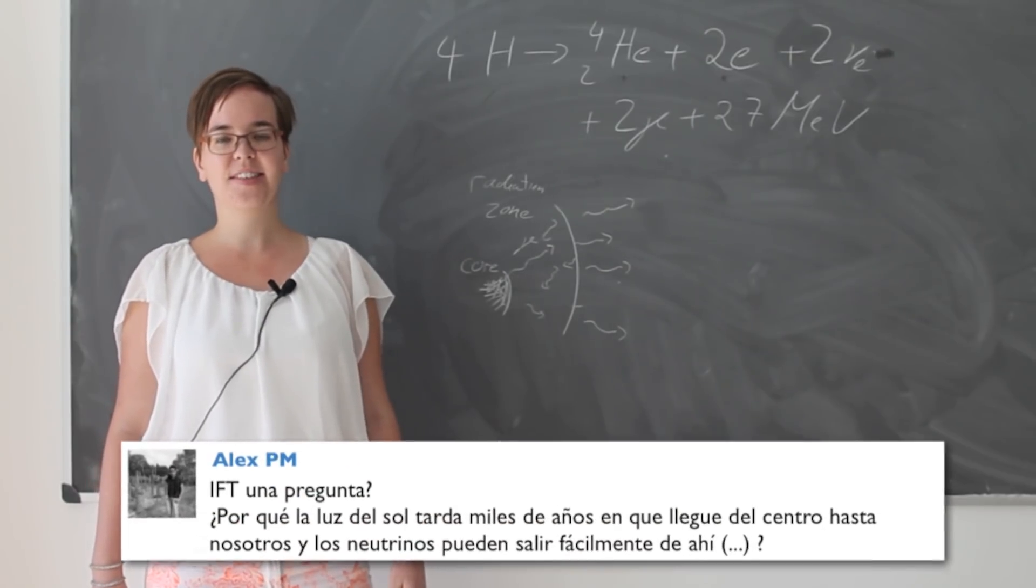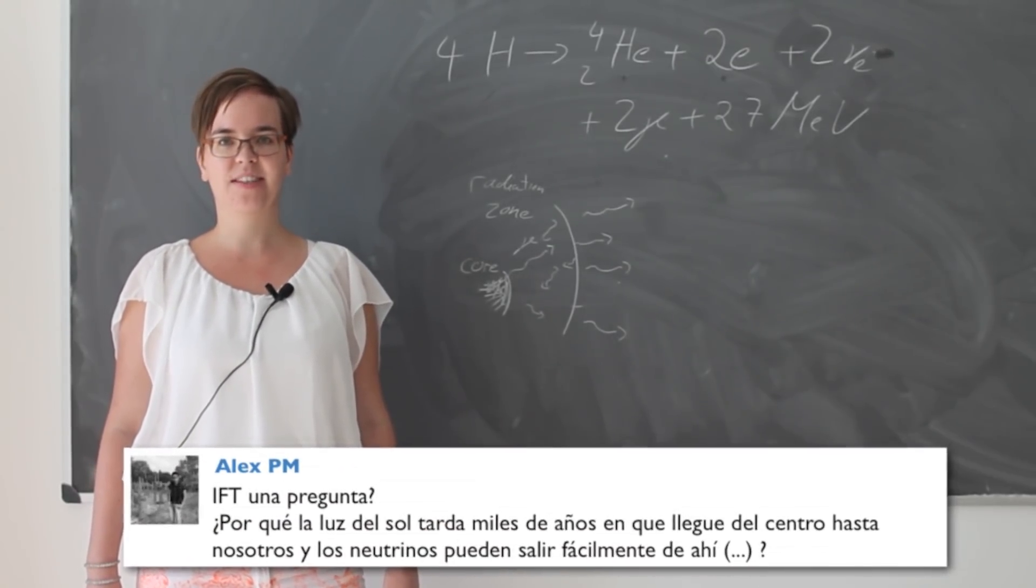Alex asks us why does light take 10,000 years to get out of the Sun whereas neutrinos get out so easily.